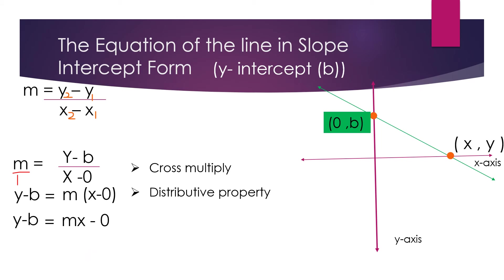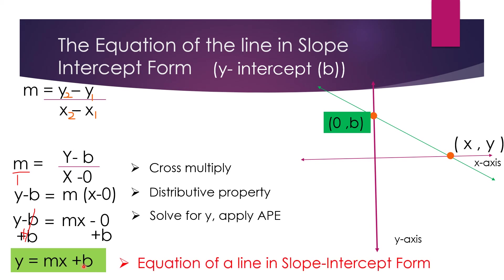Then, what I'm going to do now is, to solve for y, I'm going to apply addition property. I'm going to add b on both sides of the equation. Okay, there. So, now, this one is equal to 0. So, I'm just going to copy the b on the other side. So, y is equal to mx plus b. This is now the equation of the line in slope-intercept form. Take note, the m is the slope, and the b is the y-intercept.